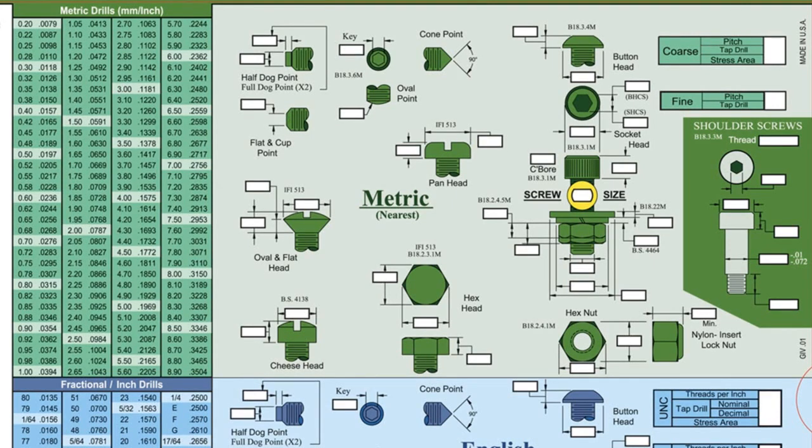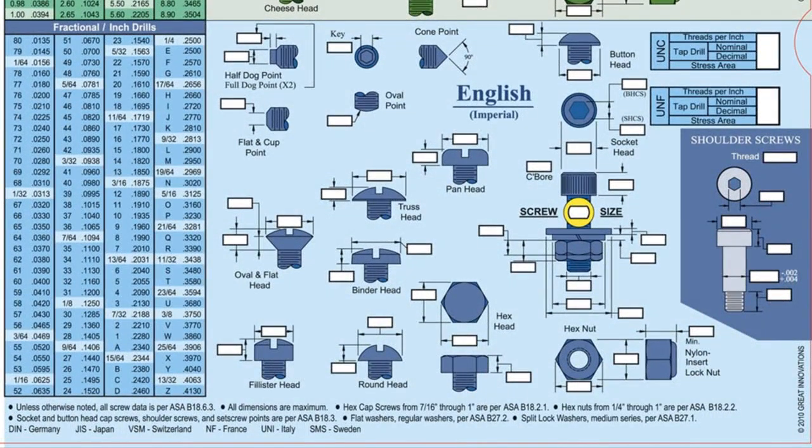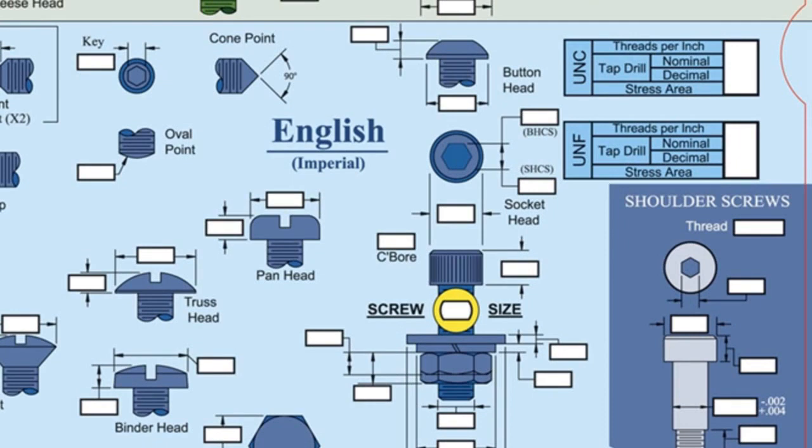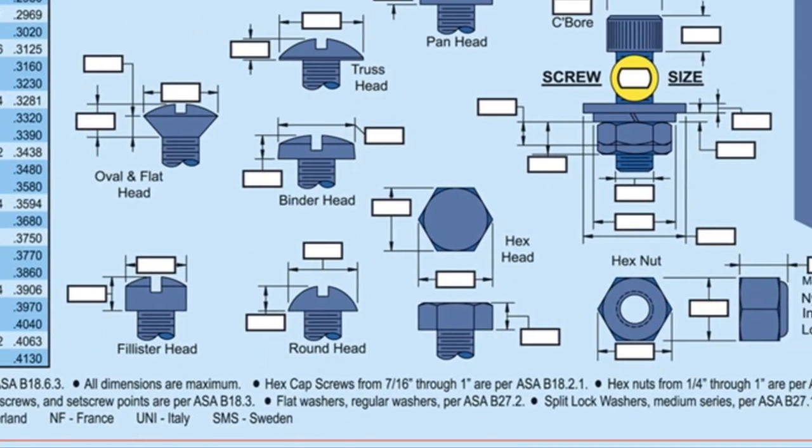Imperial fasteners ranging in size from number 0 to 1 inch are highlighted in blue at the bottom. Tables containing drill, tap, and stress areas for both fine and coarse threads are located in the upper right corner of each section. Standards for the fasteners are at the bottom of the chart or next to the fastener itself.